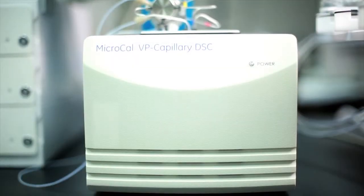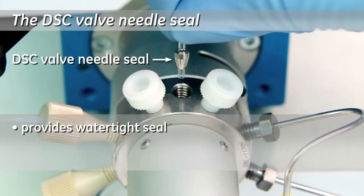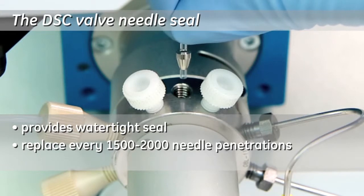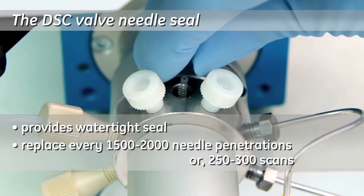The MicroCal VP Capillary DSC has a valve needle seal that provides a watertight seal for the union of the needle and the valve. The needle seal should be replaced every 1,500 to 2,000 needle penetrations or roughly every 250 to 300 scans.